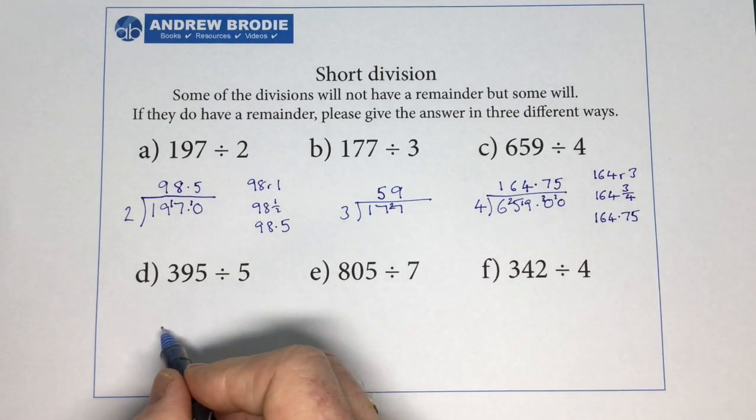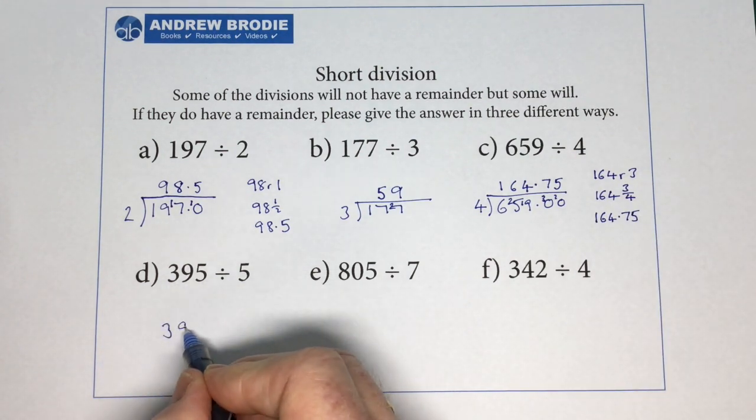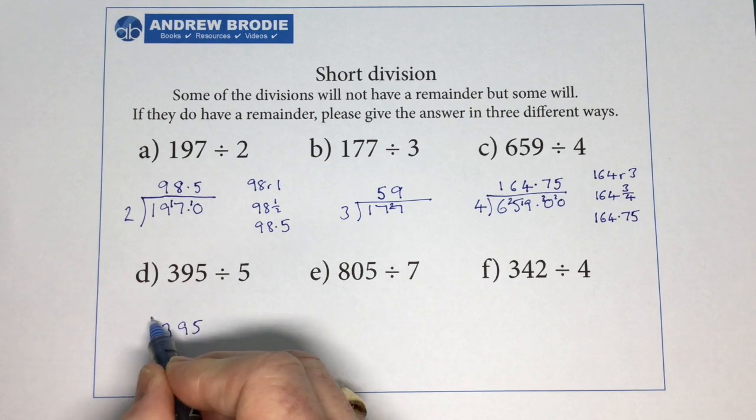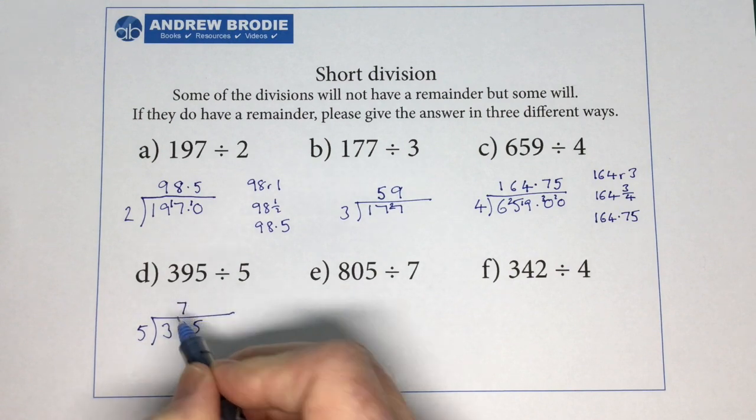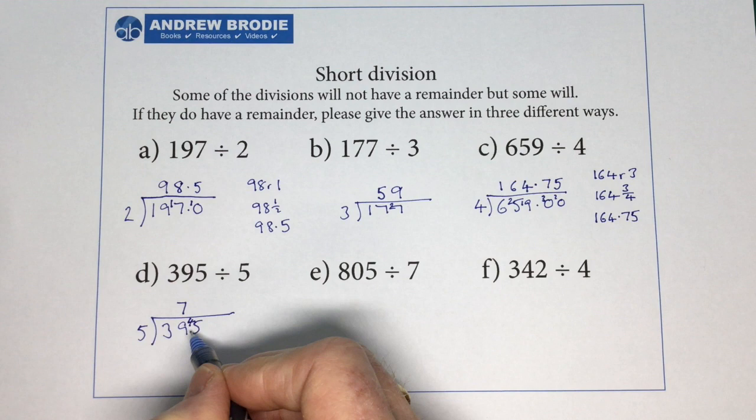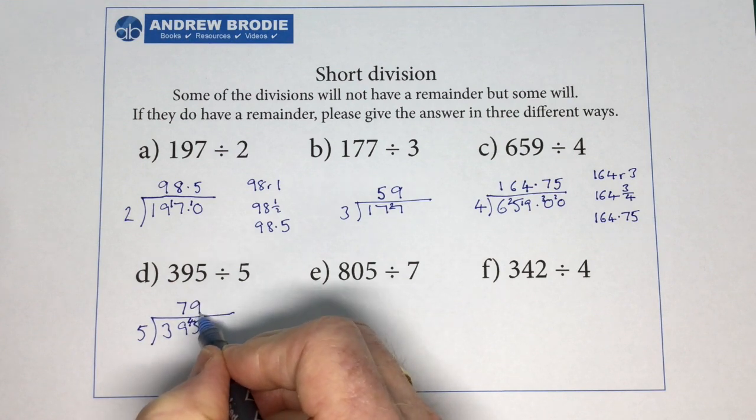Let's try this one. I can see that's a multiple of 5, so it's not going to have a remainder. 5 into 3 won't go. 5 into 39 goes 7 times because 7 5s are 35. We've got 4 left then. 5 into 45 goes 9 times. There's our answer.